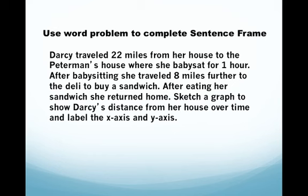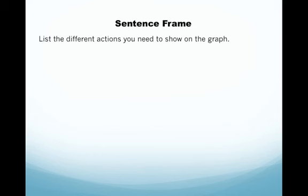Sketch a graph to show Darcy's distance from her house over time and label the x and y axis. So reread this and then try to fill in the sentence frames that follow. Sentence frame: list the different actions you need to show on the graph. Then describe what is going to happen on the graph.